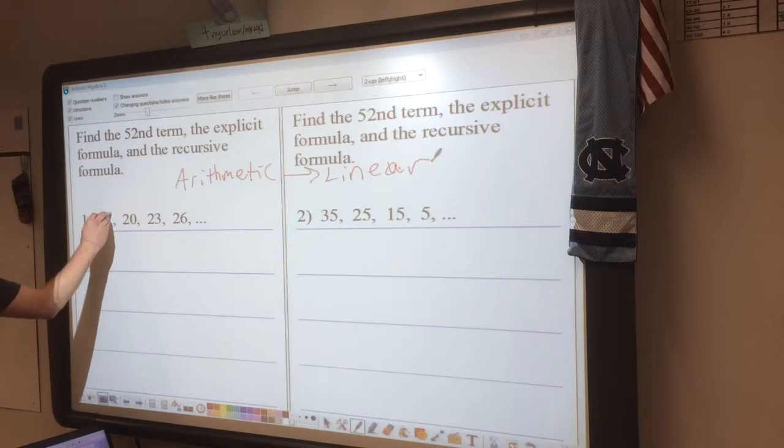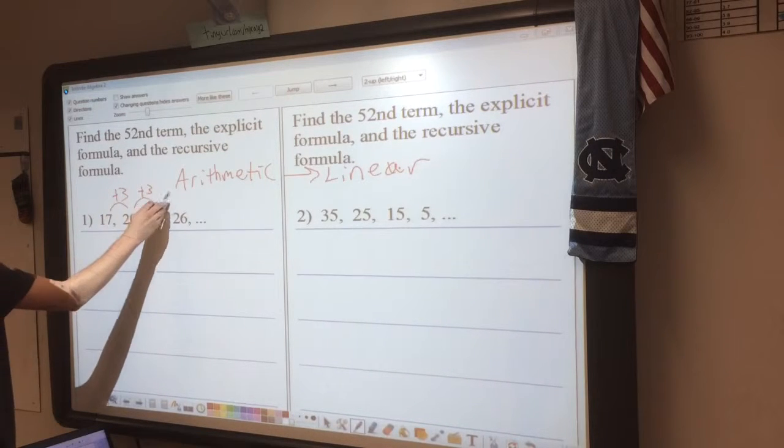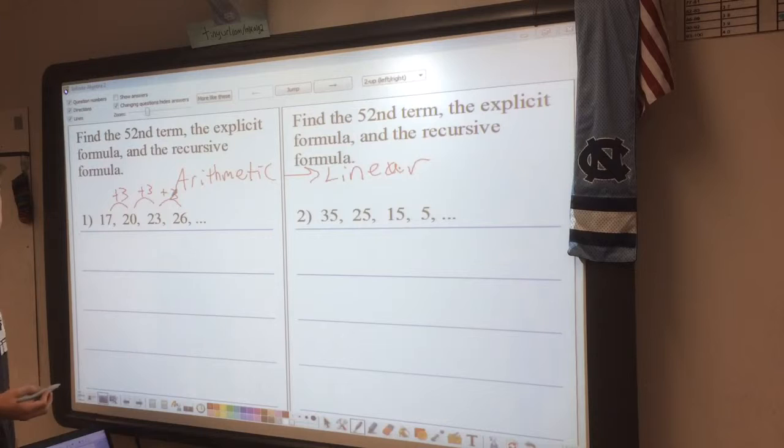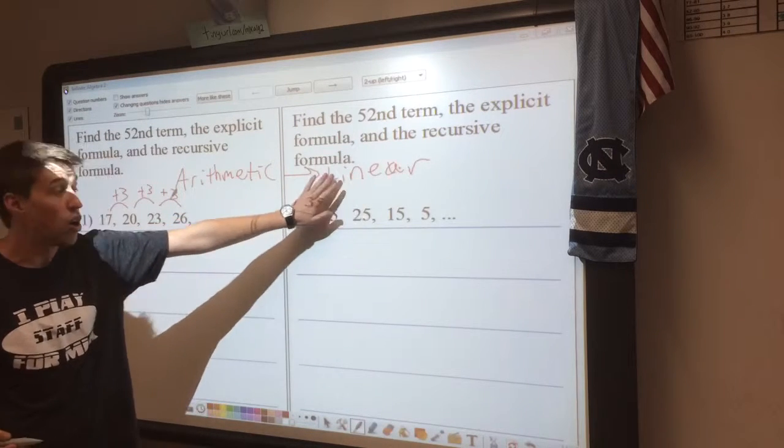So right here I see that 17 plus 3 gives me 20, plus 3 gives me 23, and plus 3 gives me 26. Since I'm adding something every time, it's linear or arithmetic.